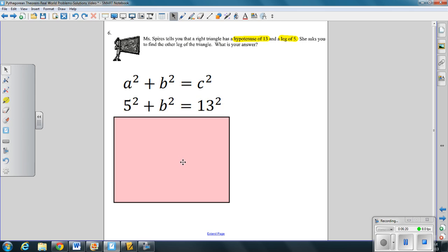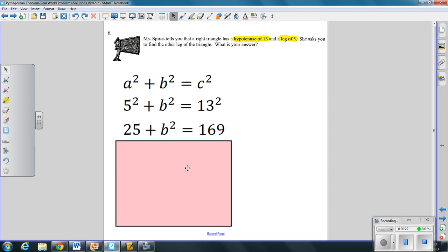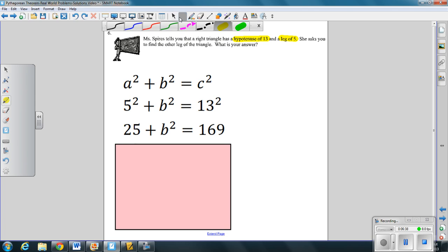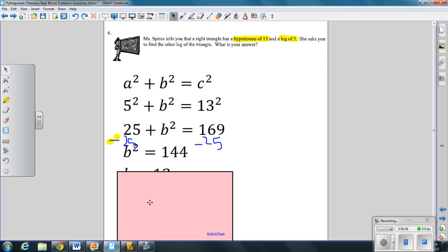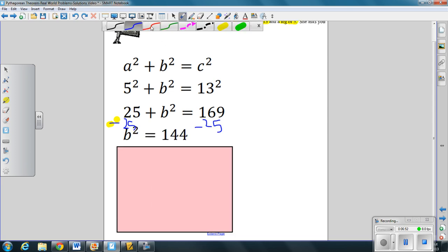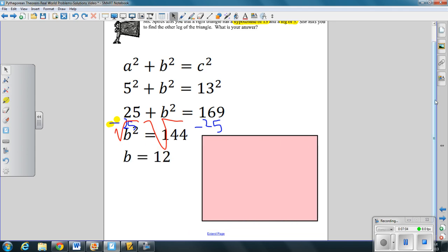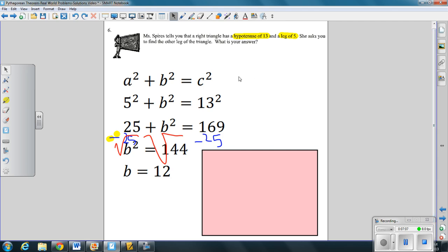Well, 5 squared plus b squared equals 13 squared because we know a hypotenuse and a leg. Square 5 and 13 to get 25 plus b squared is 169. And how do I isolate b? What's step 1? We're going to subtract 25 to both sides. We're going to minus 25 and minus 25. And we get b squared is equal to 144. And how do we undo squaring? We square root both sides. And what's the square root of 144? 12. So what does that mean? The other leg that we're looking for is 12 units in length. Any questions, please raise your hand.